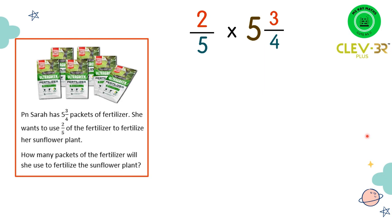So the first thing that we need to do is to convert the mixed numbers into improper fractions. So we just times 4 and 5 and then we plus 3. The denominator is still the same. So now we have 2 over 5 times 23 over 4.